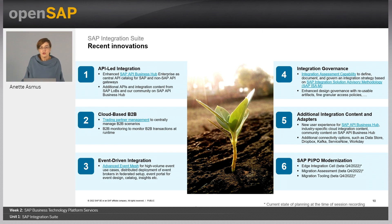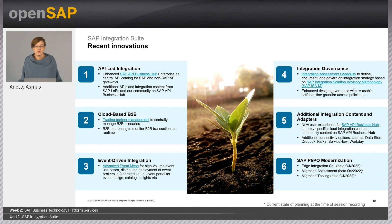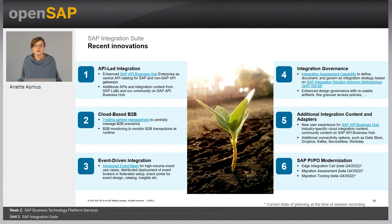Multiple customers have already migrated completely off from PO to SAP Integration Suite. For those customers who will not or cannot move all their systems to the cloud immediately, we announced a hybrid deployment option at SAP TechEd 2020. The so-called Edge Integration Cell is a local runtime for SAP Integration Suite that enables you to run process integration, event integration, and API management scenarios on-premise or in a private cloud. The Edge Integration Cell is planned to be generally available very soon. And for migrating hundreds or thousands of integration scenarios, tool-based migration support is one of the key customer requirements — the PIPO Assessment and Migration Tool is currently in beta.